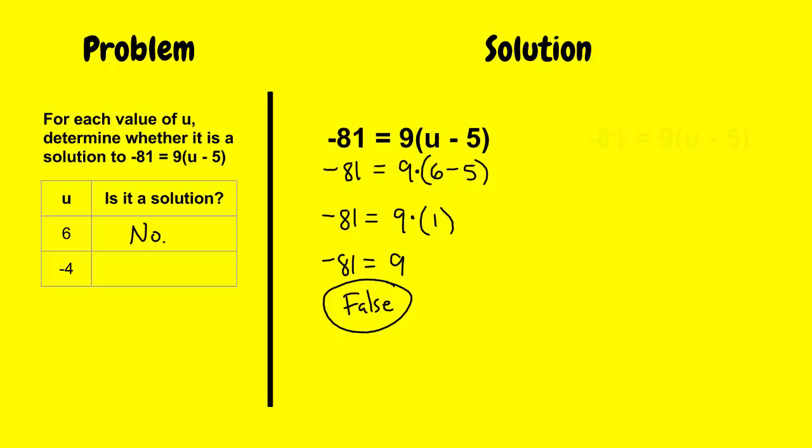So now let's check the other number. So rewrite the equation. And I'm going to replace my u as I did before. But this time I'm using negative 4. So I want to check is negative 4 a solution. So negative 81 equals 9 times the quantity. And in place of u, I'm putting negative 4 minus 5.